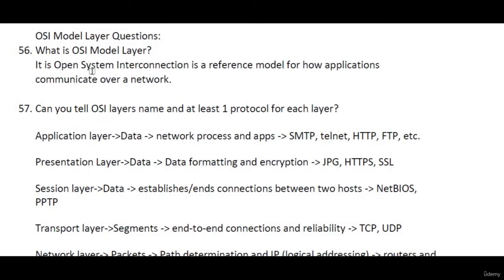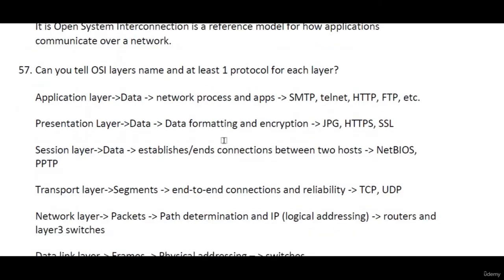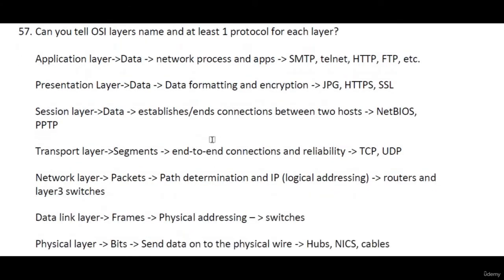The second question is: can you tell the OSI layer names and at least one protocol for each layer? Generally we have seven layers. The first is the Physical layer, where bits are actually converted and sent onto the physical wire. Protocols here include hubs and ICS cables. The second is the Data Link layer, where data framing happens, we get the physical address, and protocols include switches.